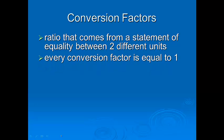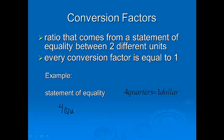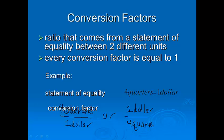Conversion factors are a ratio that comes from a statement of equality between two different units. Every conversion factor is equal to one. So for example, if you have four quarters are equal to a dollar, there's two ways you can write that. You can write it as four quarters over one dollar. Actually, is it going to pop up there? Yeah, this is what I'm writing right here is a conversion factor. Or one dollar over four quarters. And we're going to set up a lot of these conversion factors. We're going to do a lot of problems of how to show you how to properly convert from one to the other.